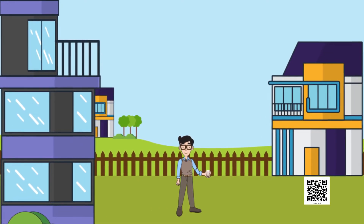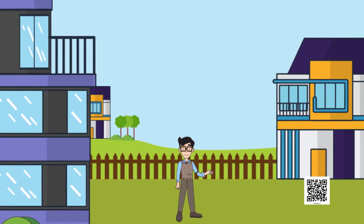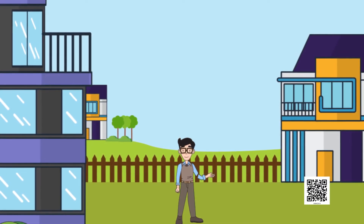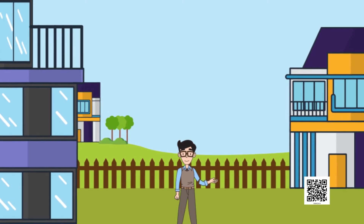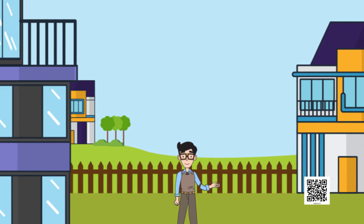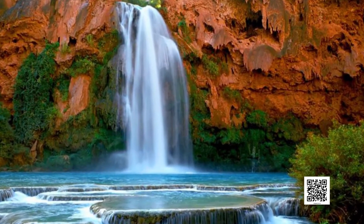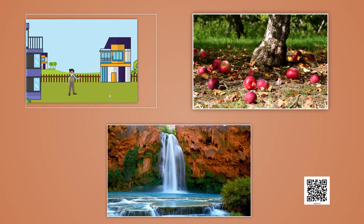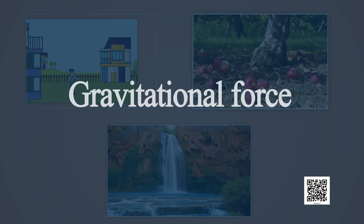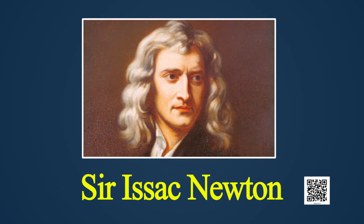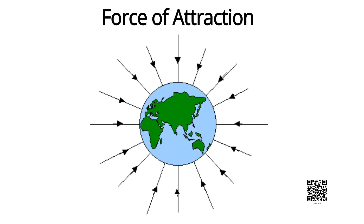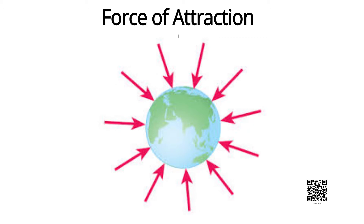While playing, when a ball is thrown upwards it reaches a certain height and then falls towards the earth. Why do fruits always fall downwards? Why does water from any source fall downwards? The answer to all these questions is gravitational force. Sir Isaac Newton explained that all objects fall down because of the force of attraction of the earth. This force of attraction is called the gravitational force of the earth, or gravity. It means the earth attracts all bodies towards its center.